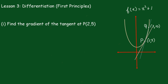I'm going to first work out the gradient of the secant PQ. The gradient of secant PQ is the difference in the y values: 10 - 5 over 3 - 2, which equals 5. Now what we'll do is take this Q